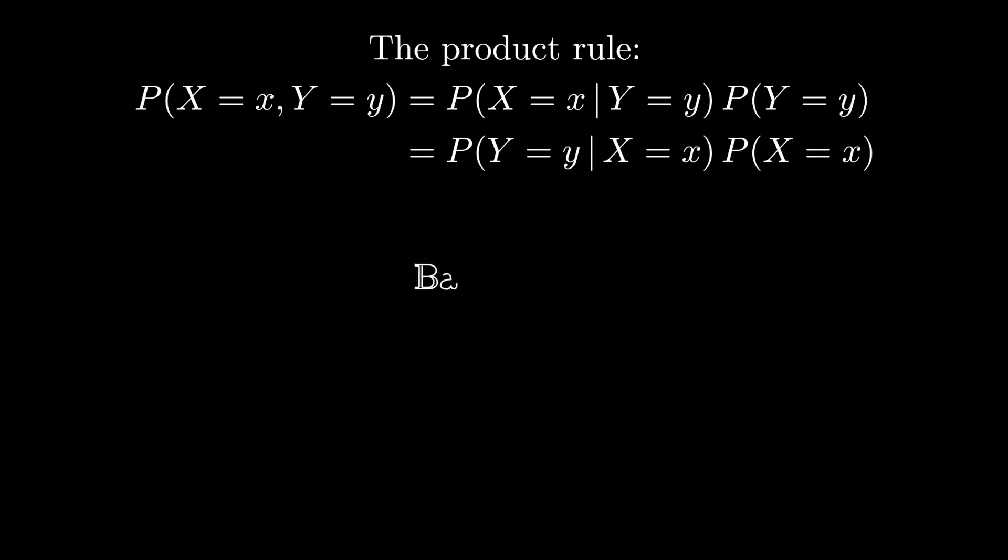The computation of a conditional distribution by dividing a joint distribution by a marginal can also be referred to as the product rule. All that's happened here is we've multiplied both sides by the marginal p of y. And of course, we also could have done this decomposition by conditioning on x instead.